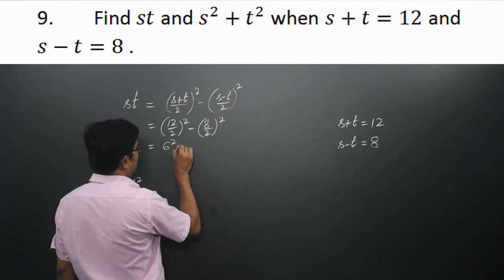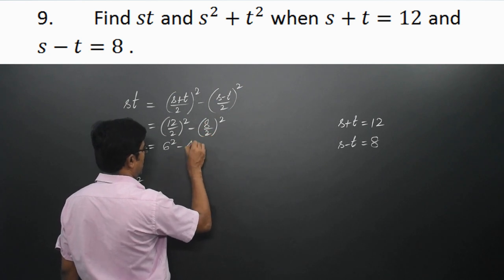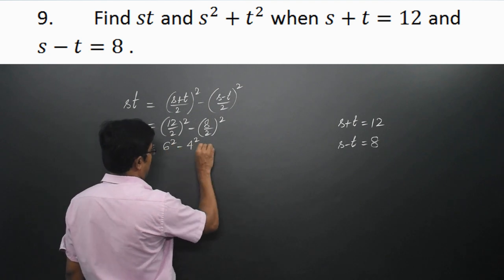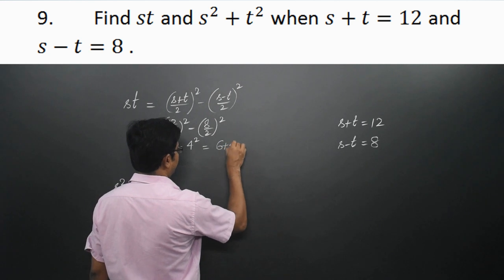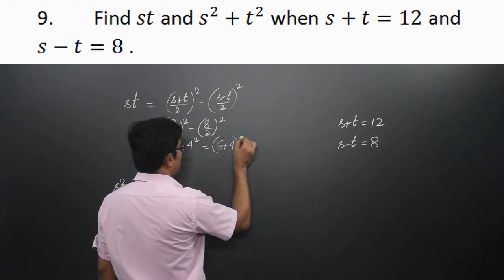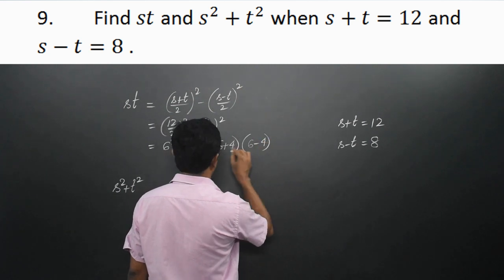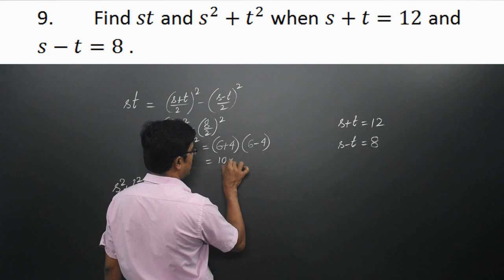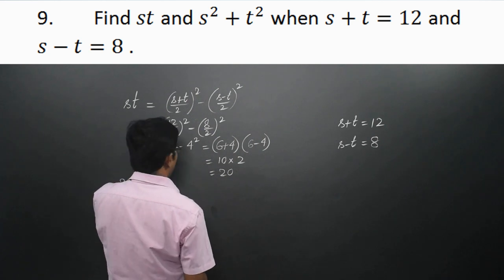This is of the form a² − b², which can be written as (a + b)(a − b), that is (6 + 4)(6 − 4) = 10 × 2 = 20. So the value of st is 20.